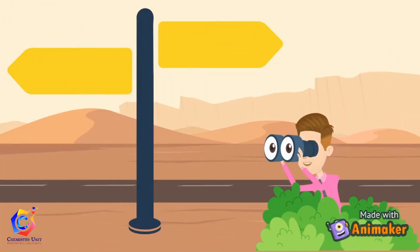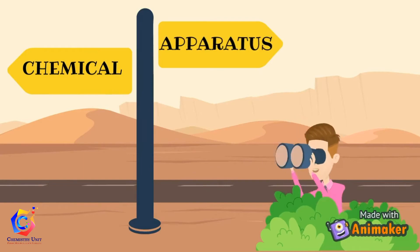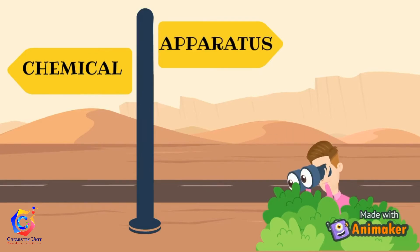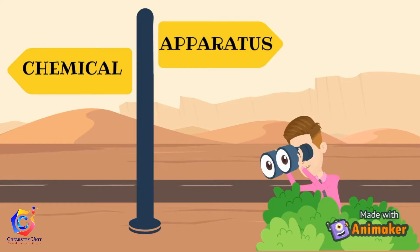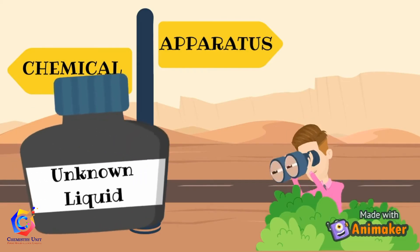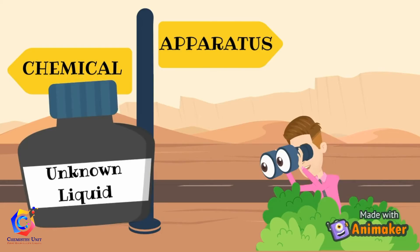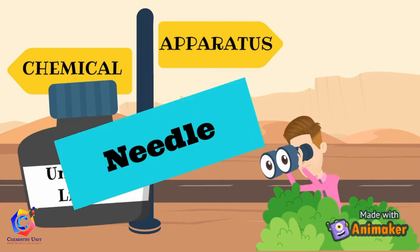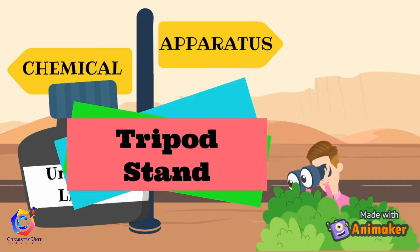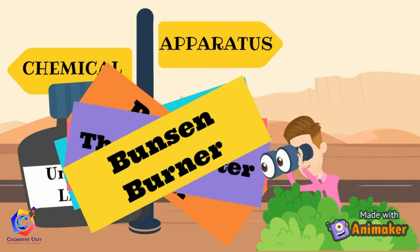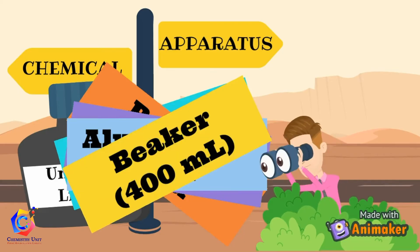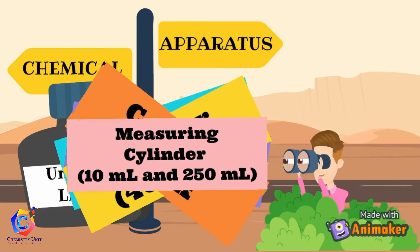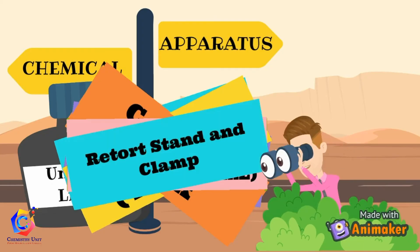Now let us look at the chemicals and apparatus for Part B of this experiment. For chemicals, we only need a reagent bottle labeled unknown liquid. For apparatus, we need a needle, wire gauze, tripod stand, rubber band, thermometer, Bunsen burner, aluminum foil, beaker, analytical balance, conical flask, measuring cylinder, and a retort stand with its clamp.